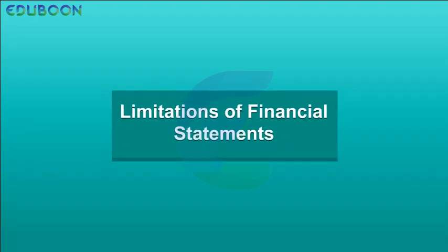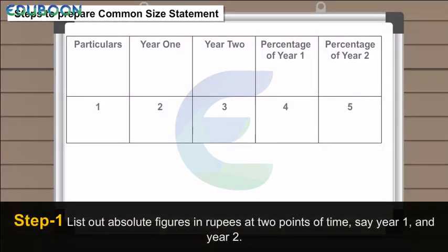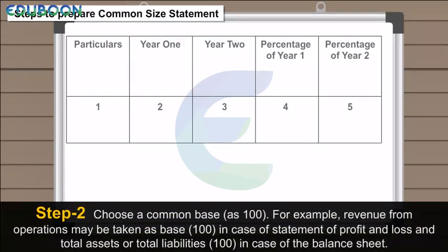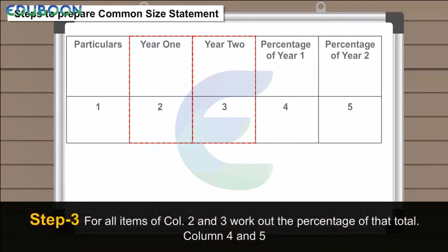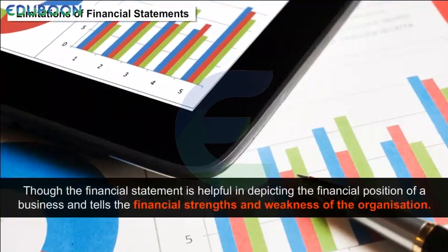Steps to Prepare Common Size Statement: Step 1 — List out absolute figures in rupees at two points of time, say Year 1 and Year 2. Step 2 — Choose a common base as 100; for example, revenue from operations may be taken as base 100 in the statement of profit and loss, and total assets or total liabilities as 100 in the balance sheet. Step 3 — For all items in Columns 2 and 3, work out the percentage of that total in Columns 4 and 5.